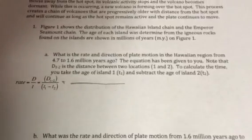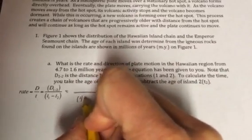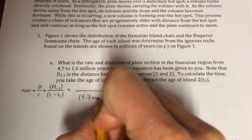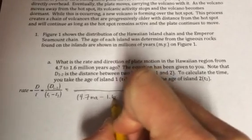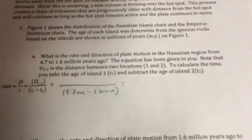So we're going to just write this out, and now we already know the ages that we're looking at. They gave it to us: 4.7 and 1.6 million years ago. So 4.7 million years ago minus 1.6 million years, and now I just need to know the distance between those two.